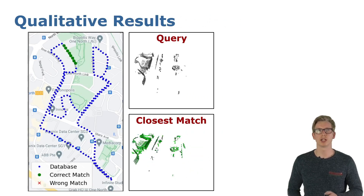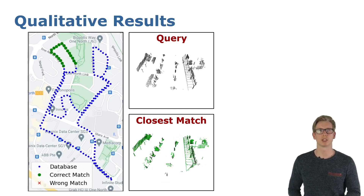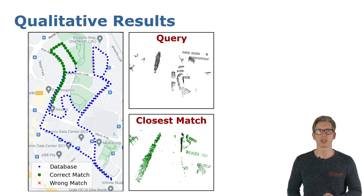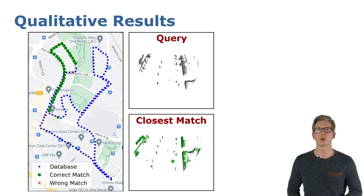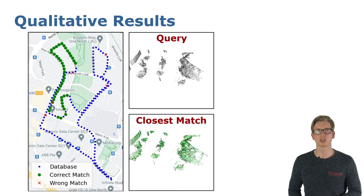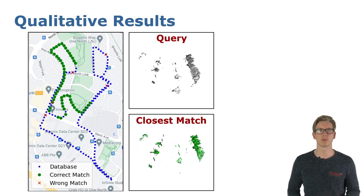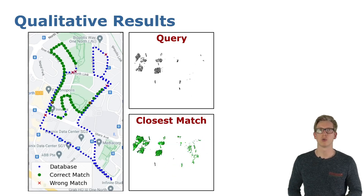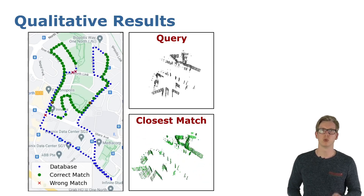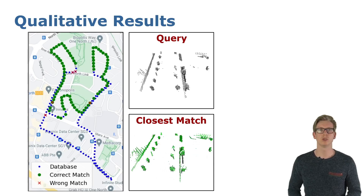This is an example result of our approach in a business district in Singapore. In blue we have our database consisting of the locations, the local point clouds, and their computed descriptors as keys. When driving through the environment at a different point in time, we compute the local descriptor of our current surroundings and query the database. We always show the closest match and visualize whether it was correct or wrong — green positions are correctly matched while red ones belong to wrong matches. Our approach is able to localize correctly most of the time using only the closest position.